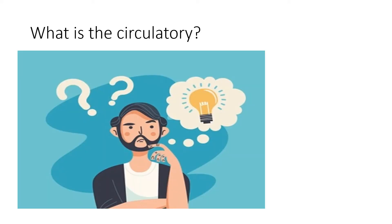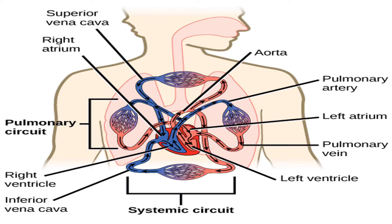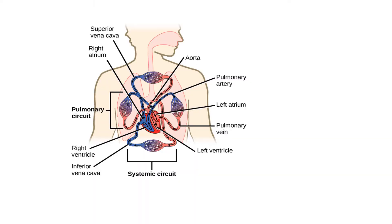Today we will be talking about the circulatory system. The circulatory system in humans is the combined function of the heart, blood, and blood vessels to transport oxygen and nutrients to organs and tissues all over the body. It also carries waste products.